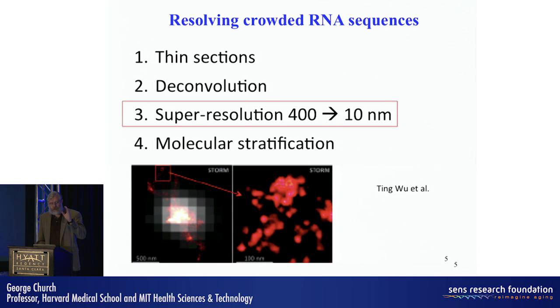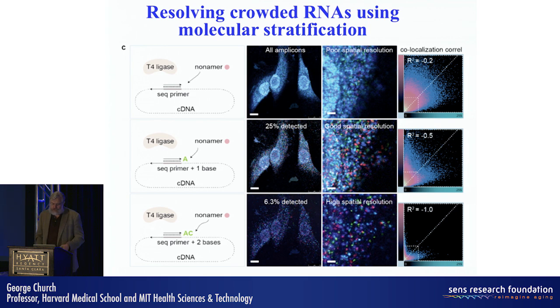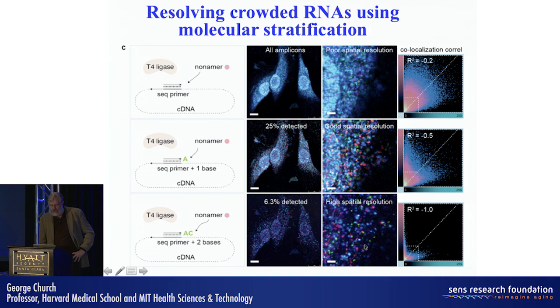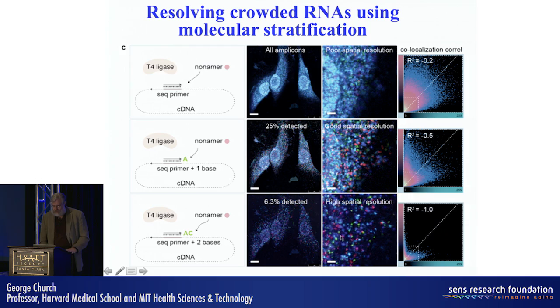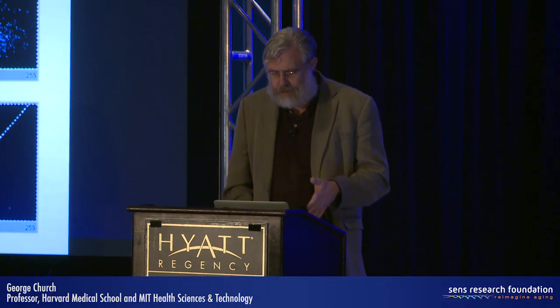We can actually read multiple RNAs in the same voxel, no matter how tiny that voxel is — we can get more than one sequence from it. We do this by a trick called molecular stratification: we read a subset of messenger RNAs by selective priming or selective sequencing, then go back and get a different subset using a different set of primers. You can see how much cleaner the signal is by getting a subset than by using random prime with all possible six-mers. Here we take a subset reduced by 16-fold, with improvement in quality, but we still get the same ultimate number of RNAs identified.